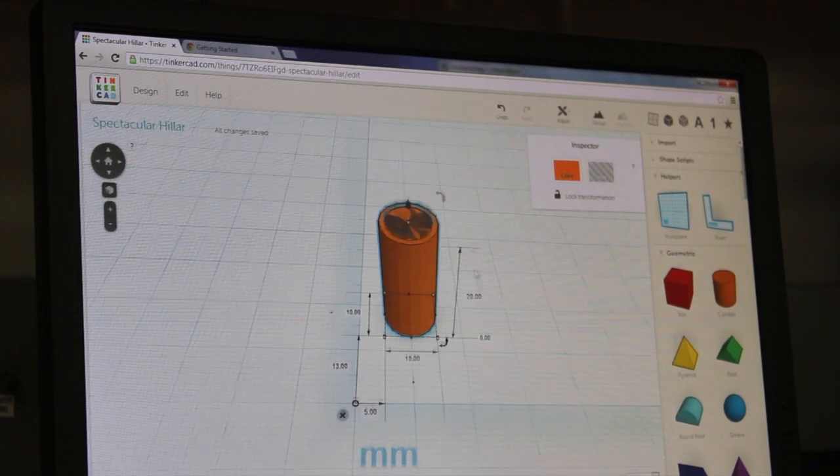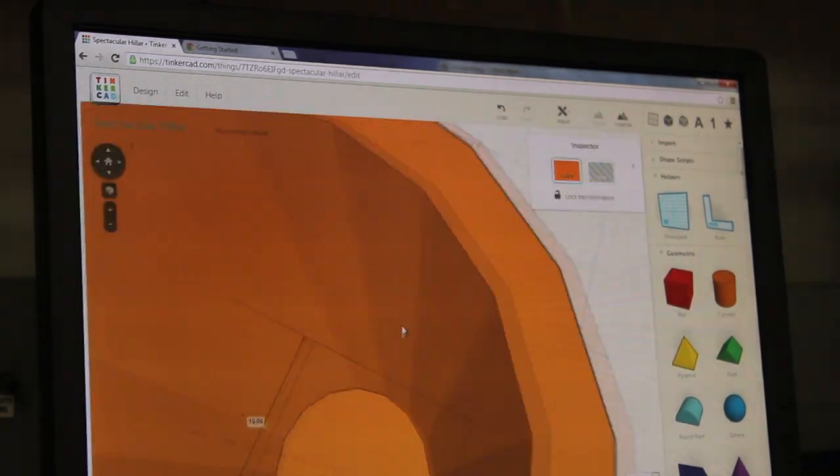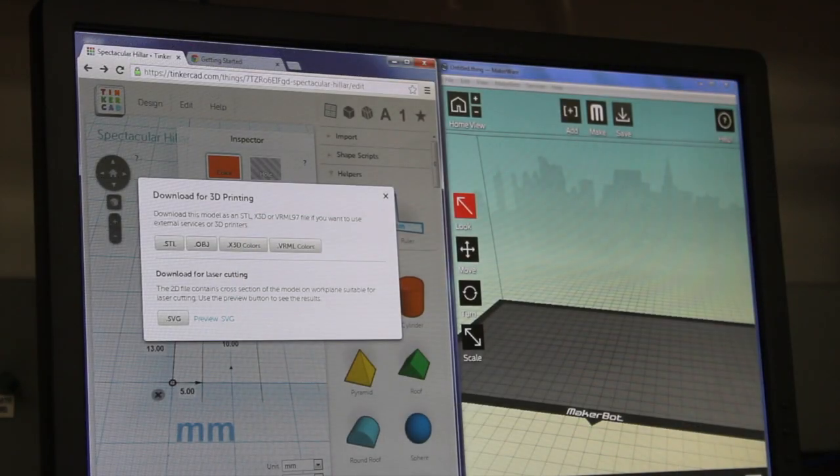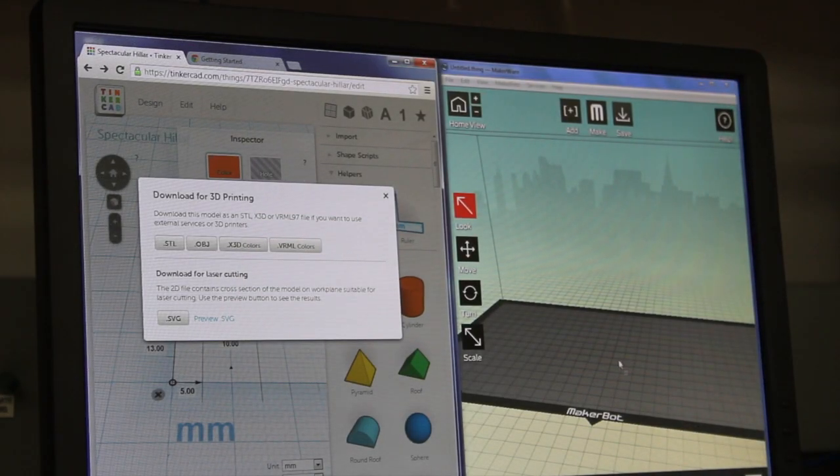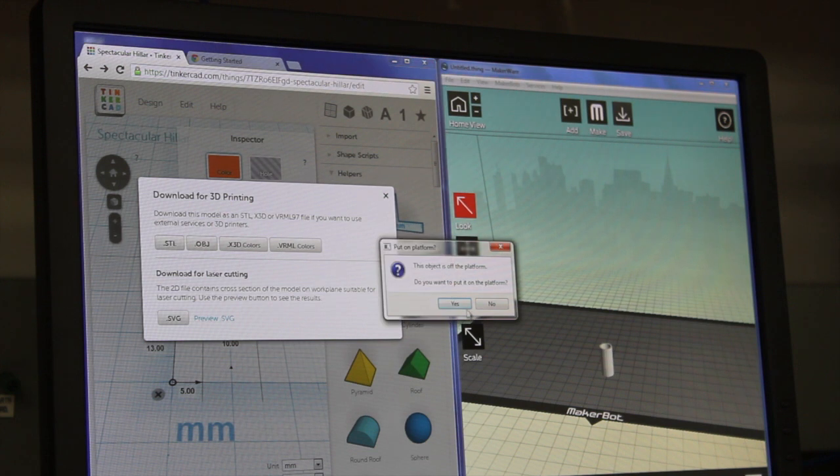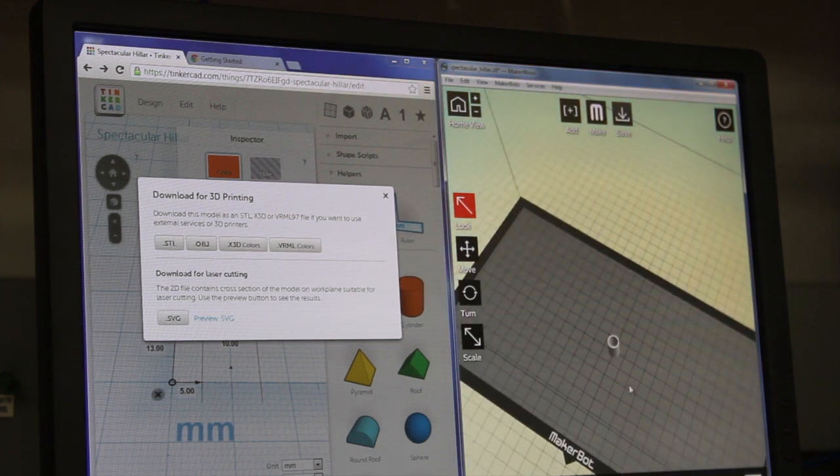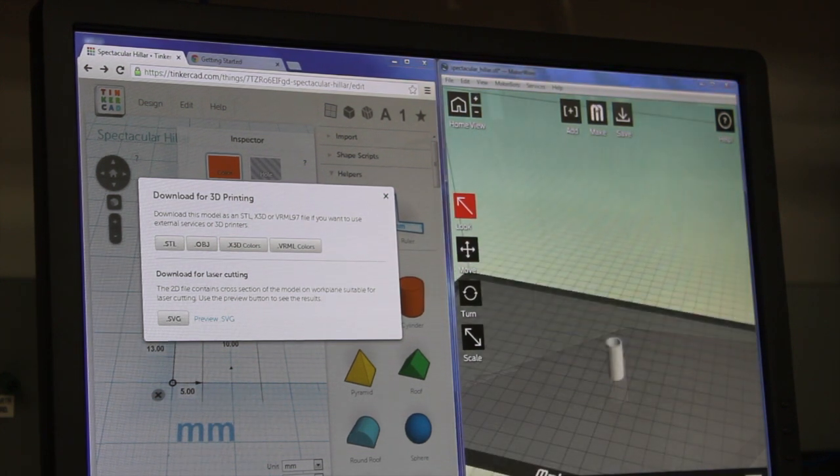You just kind of place shapes down, you can resize them. So we just drag it into our MakerBot Makerware and there's our cup, just hit make.